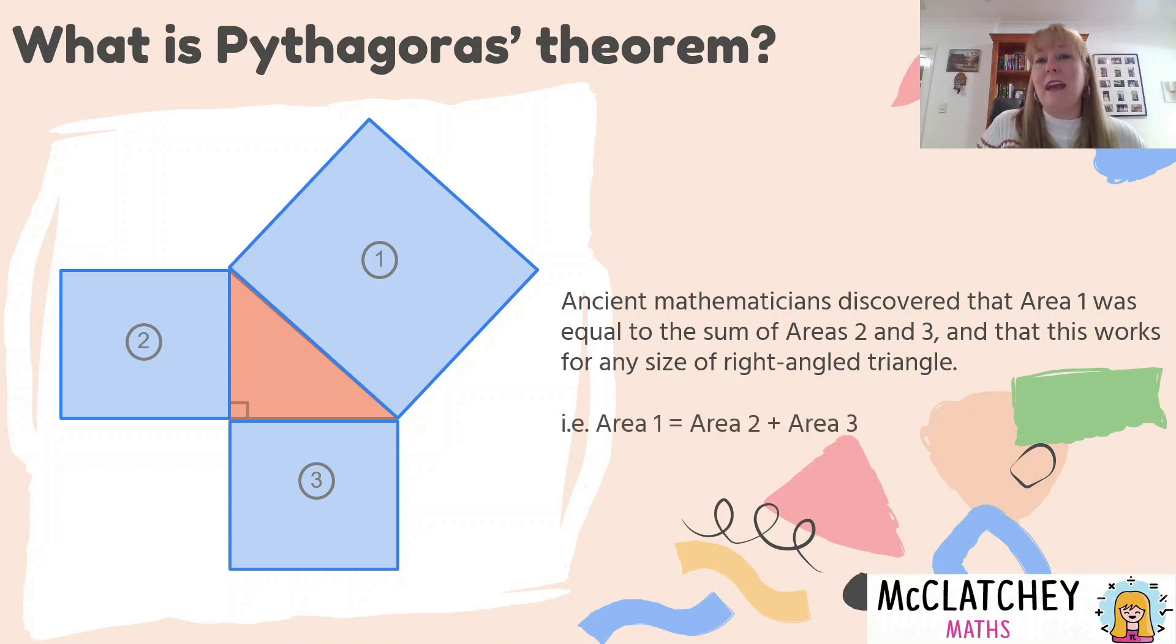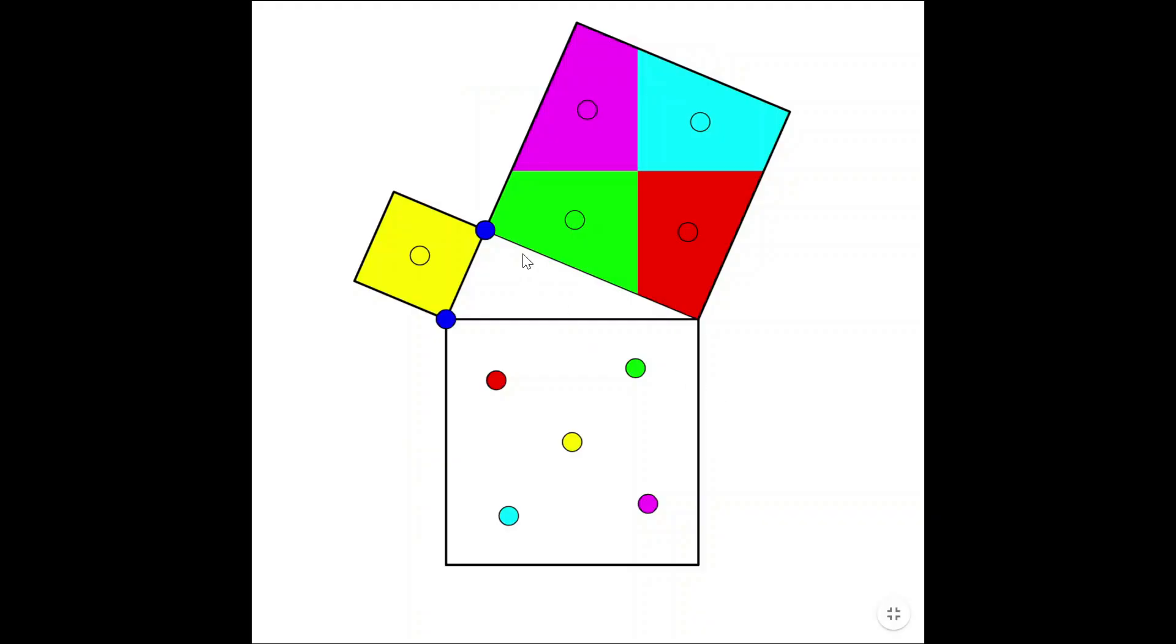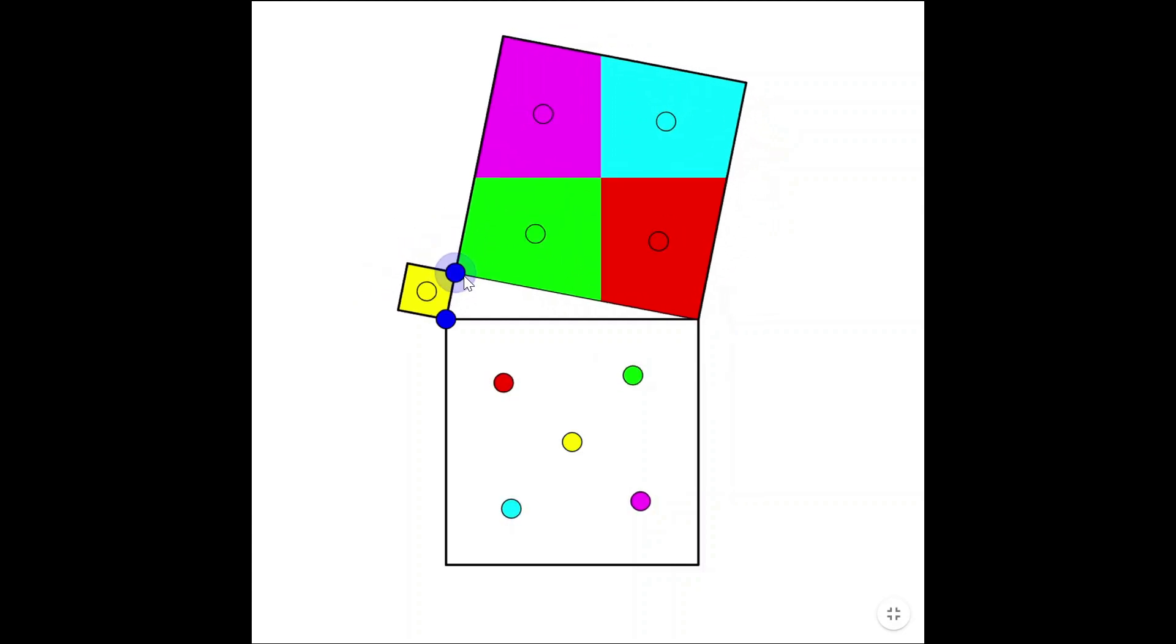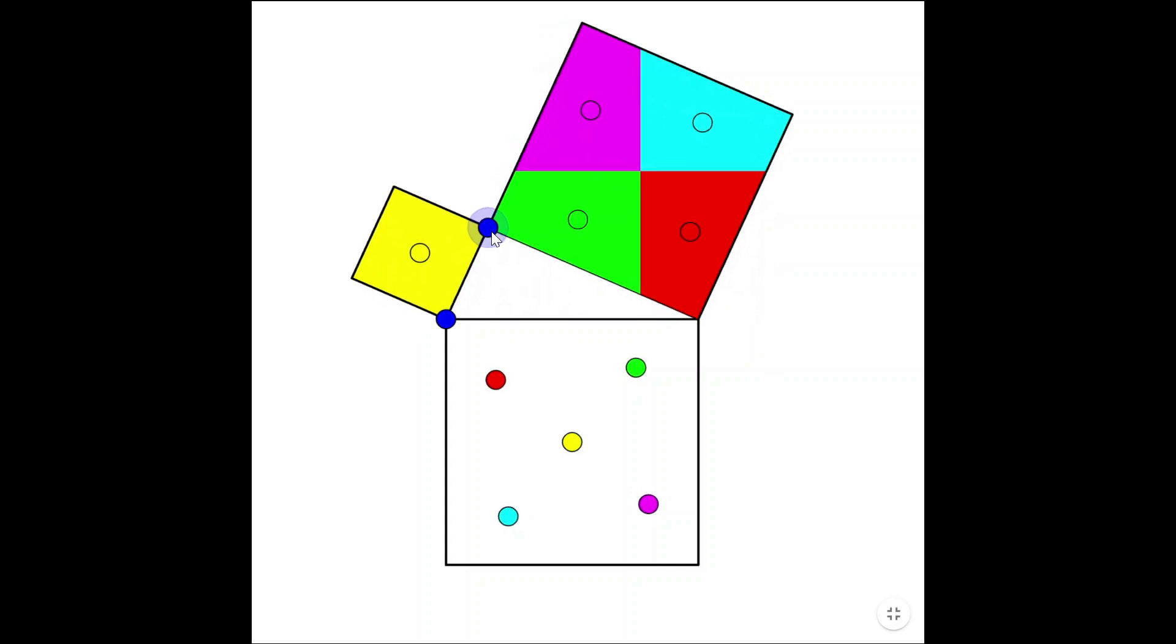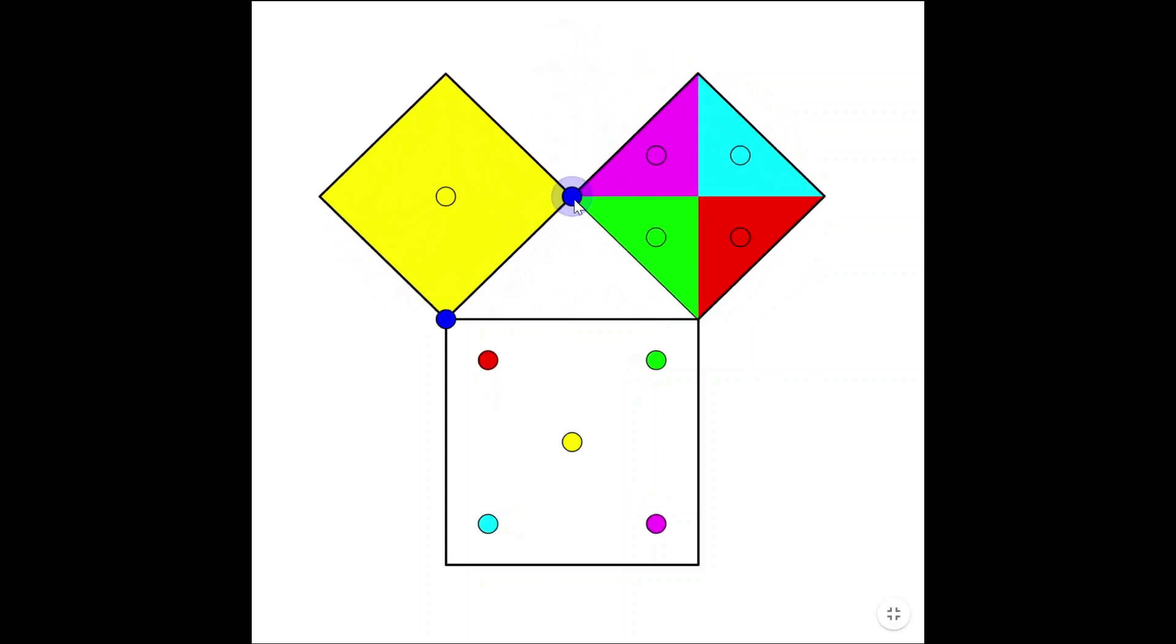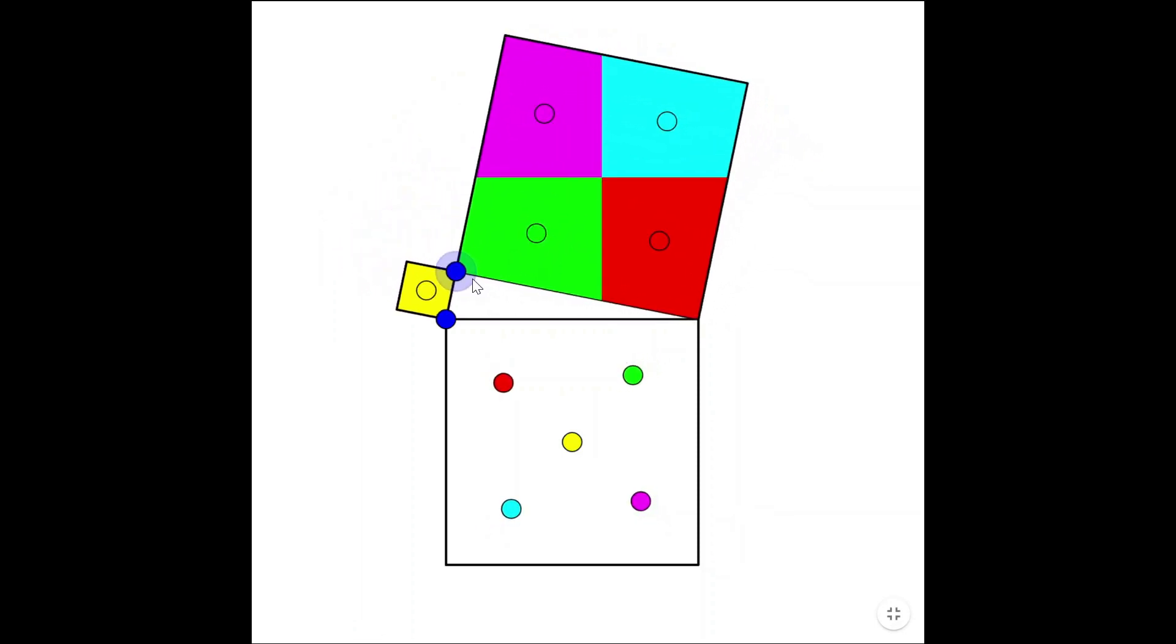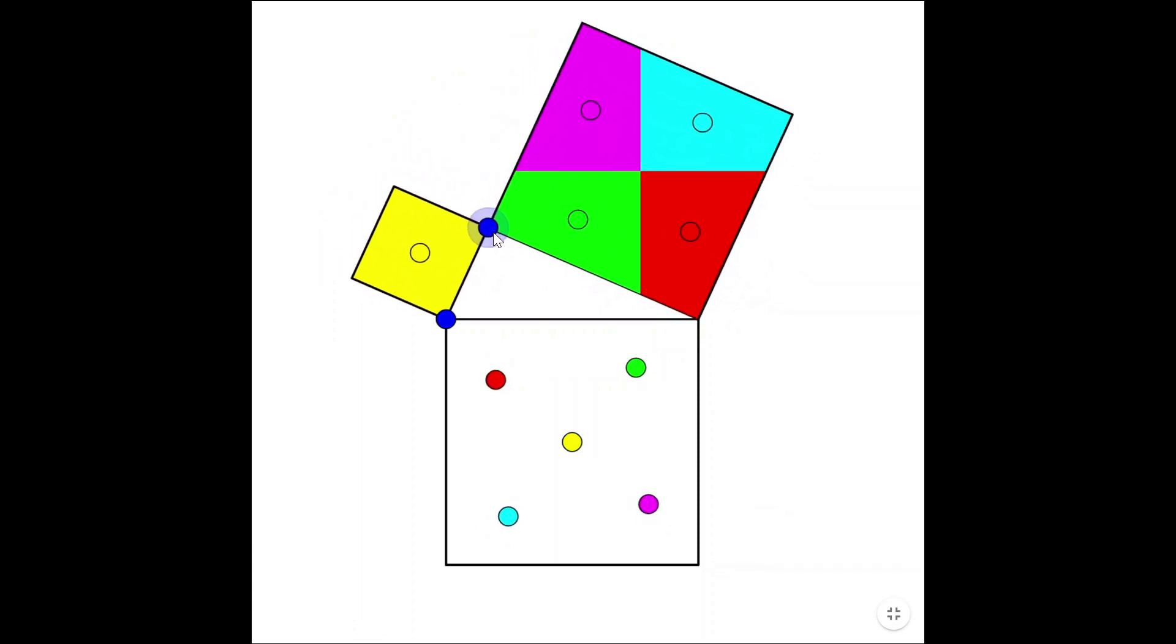Another way of saying that is that area one is going to be equal to the sum of area two and three, or area two plus area three. As can be seen in the animation on screen, no matter how the length or the breadth of the triangle changes, so whether we make those small sides bigger or smaller, the area that's formed by the longer side will always be equal to the areas formed by the other two sides combined together.